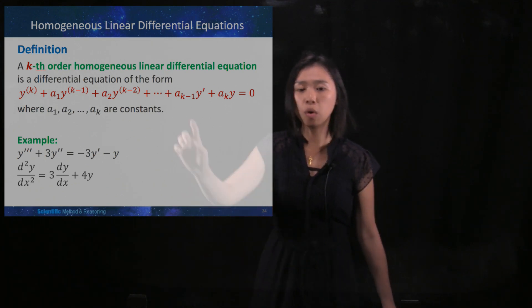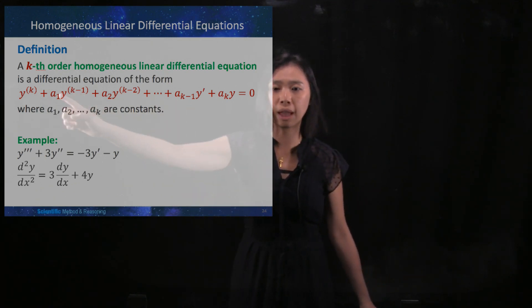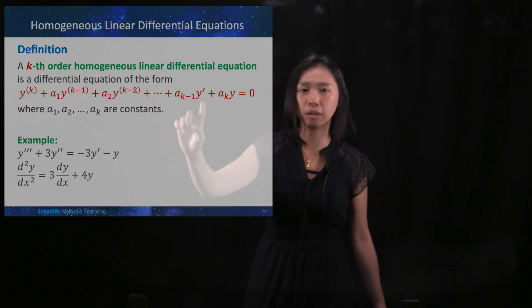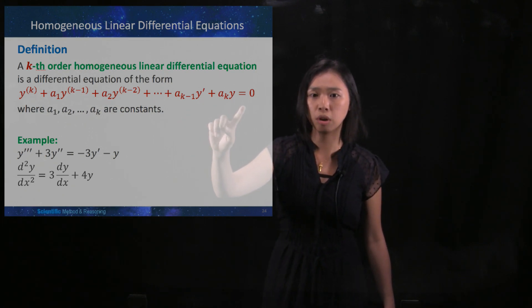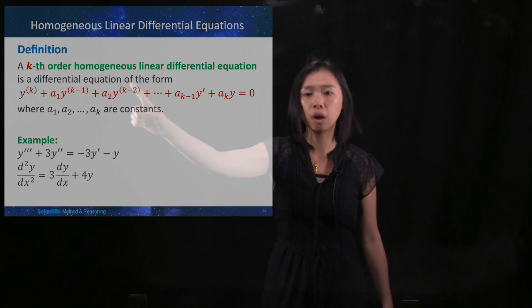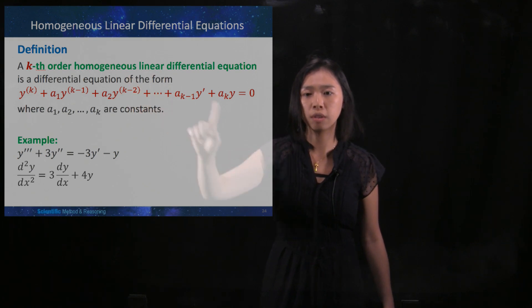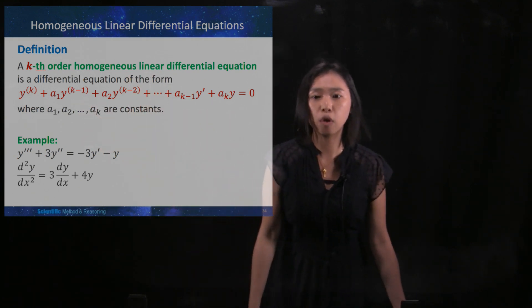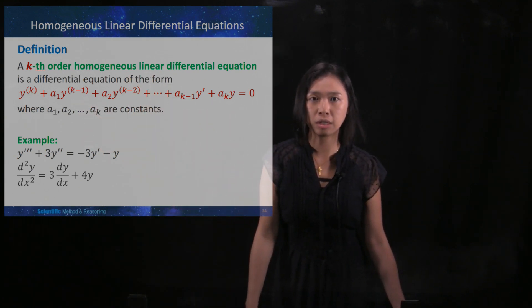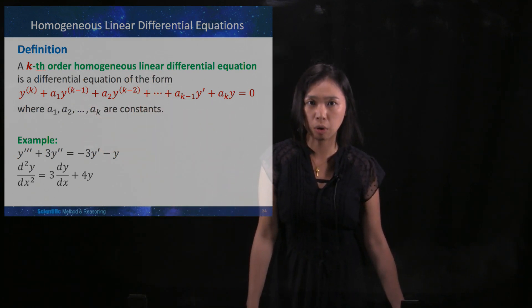All these terms, when they add up together, are equal to zero. That means there is no non-zero constant term, and that is why we call it homogeneous. So this is a k-th order homogeneous linear differential equation.